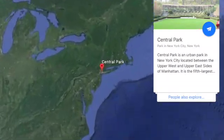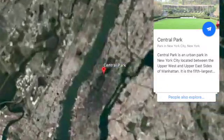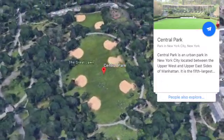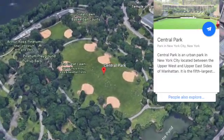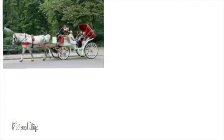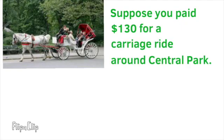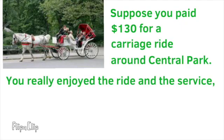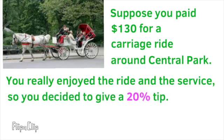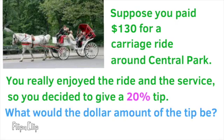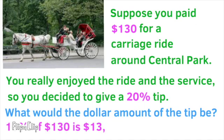Central Park is an urban park in New York City, located between the Upper West and Upper East Sides of Manhattan. It is the fifth largest park in New York City. Suppose you paid $130 for a carriage ride around Central Park. You really enjoyed the ride and the service, so you decided to give a 20% tip. What would the dollar amount of the tip be? 10% of $130 is $13, so 20% is $26.